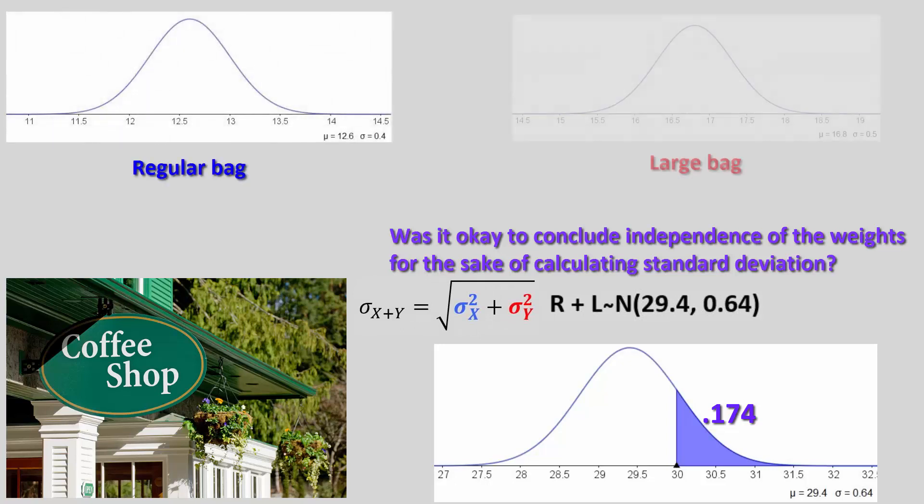Since we randomly selected one of each. However, if what we randomly selected was the same customer and then we used both of her weights, these would not be independent weights. We would not expect random fluctuation about the mean in both cases.